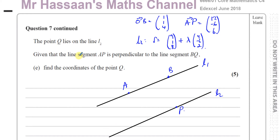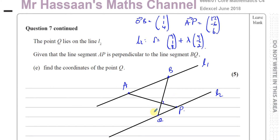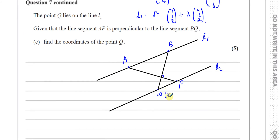Given that line segment AP is perpendicular to BQ, if I draw a line perpendicular to AP, then Q must be on line 2 such that the line joining AP and BQ are perpendicular. We need to find the coordinates of point Q — essentially, I need to find the position vector of Q.